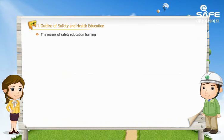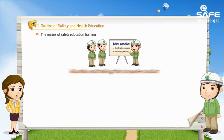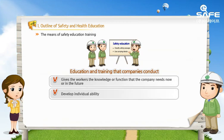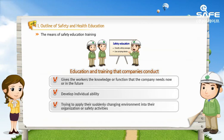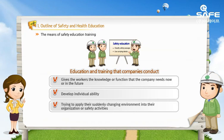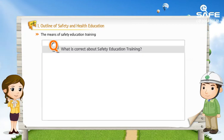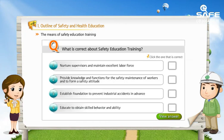Can you please explain more about safety education training? The education and training that companies carry out gives the workers the knowledge or function that the company needs now or in the future. By developing the individual's ability, the company tries to adapt to its suddenly changing environment through its organization or safety activity, and at the same time aims to open the way of self-realization to the individuals working there.